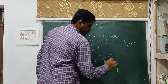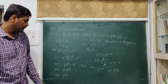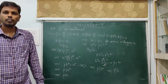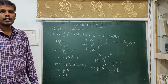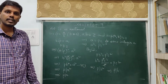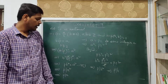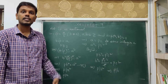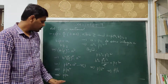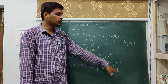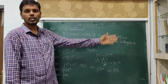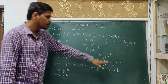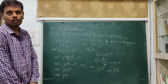If p divides b², then by the theorem we discussed previously, p divides b. Now we have p divides a and p divides b. But initially we assumed that a and b are coprime — that is, no number other than 1 divides both a and b. Here we have arrived at a prime number p which divides both a and b, which is a contradiction.